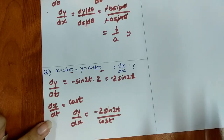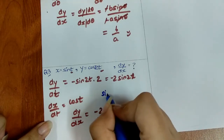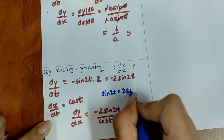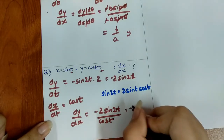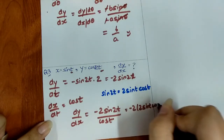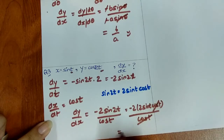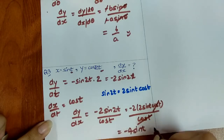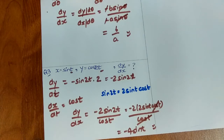To simplify, use the identity sin 2t = 2 sin t cos t. So numerator becomes −2 × 2 sin t cos t = −4 sin t cos t. Dividing by cos t, the cos t cancels, giving dy/dx = −4 sin t. It is always better to simplify the answer as much as possible.